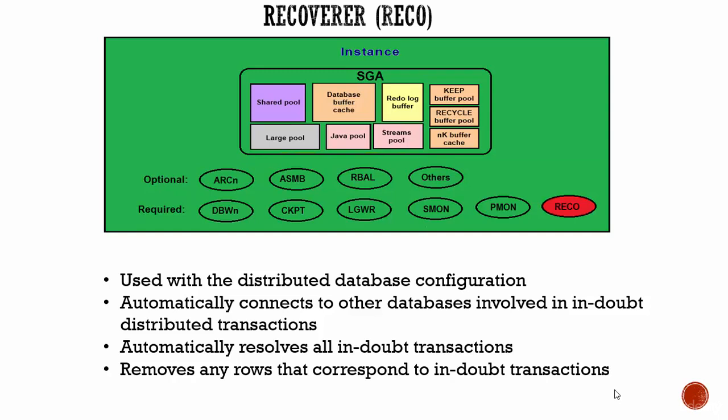For example, you have a distributed database with three databases and the user is trying to insert data into the customer table. If this insert has to be successful, it has to be performed in all three databases. Now you insert in the first database and then in the second database, but before you insert the row in the third database, the second and third databases go down.